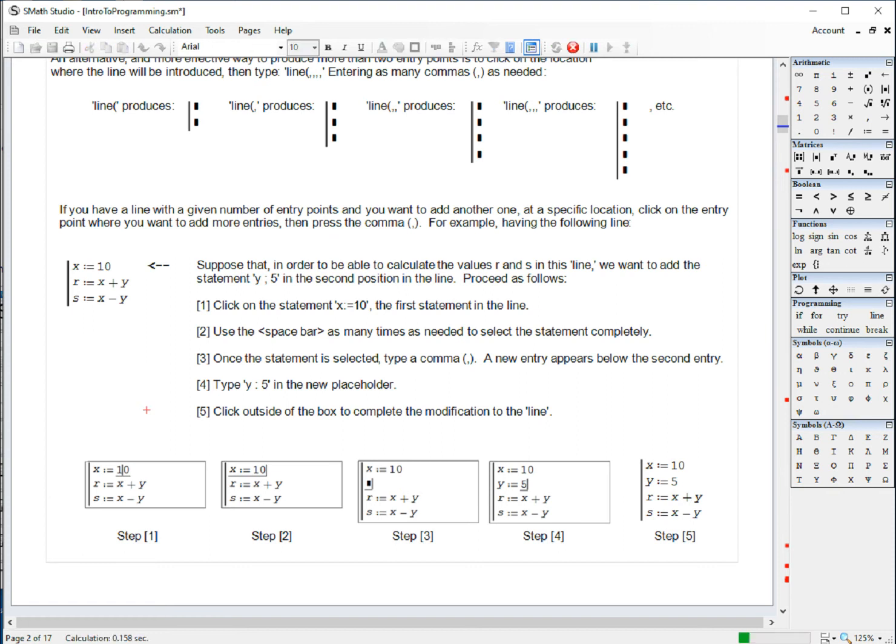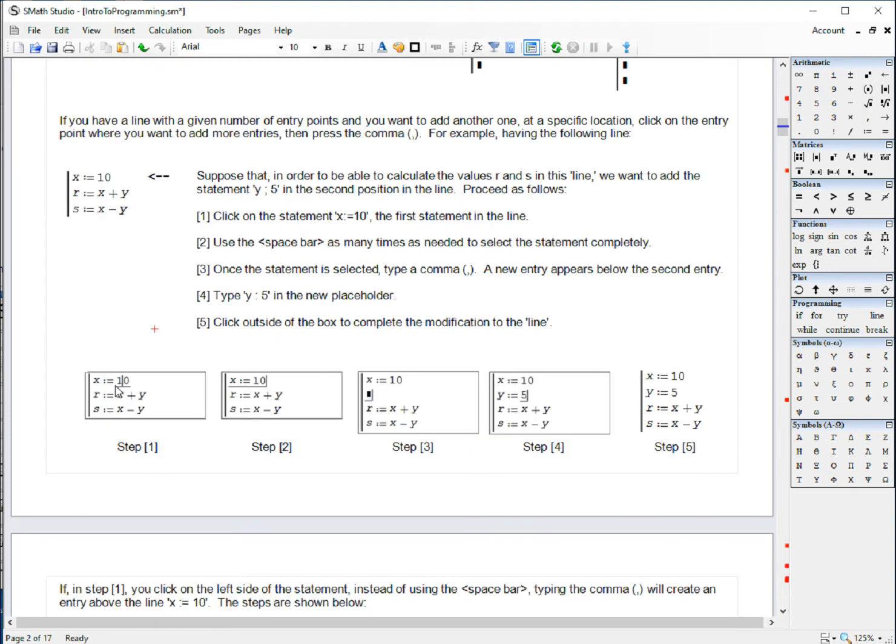Another possibility would be: starting from here, if you want your entry point to be above the line that you used as reference, click on the left-hand side of the line and then enter the comma there, and then you get your entry point above, and you can change that to something else. So that's how you can insert an entry point in a line if you don't have it available.